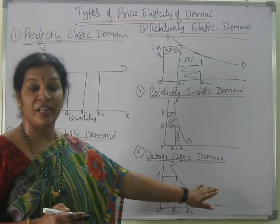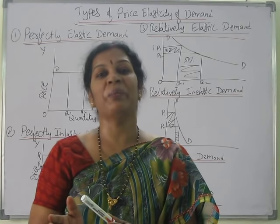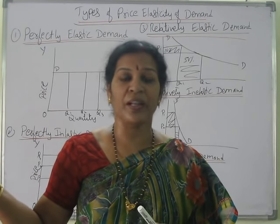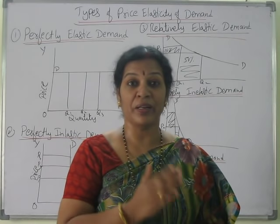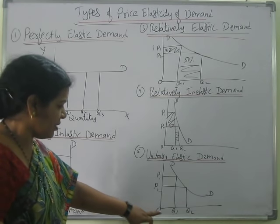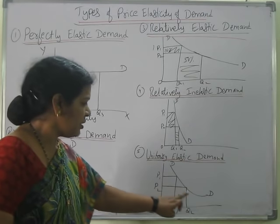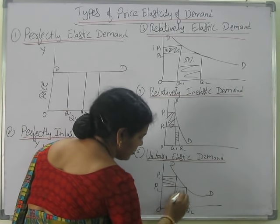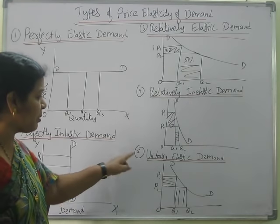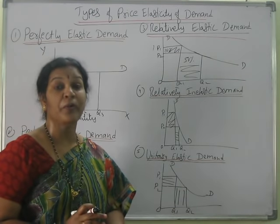The fifth type is unitary elasticity of demand. In unitary elasticity, price is increasing by 50% and demand will also be increasing by 50% — both are equal, no ups and downs. A 10% increase in price leads to a 10% increase in demand. In the diagram, when price is P1, quantity is Q1; when price is P2, quantity is Q2, with the same proportionate change. This is what we call unitary elasticity of demand.